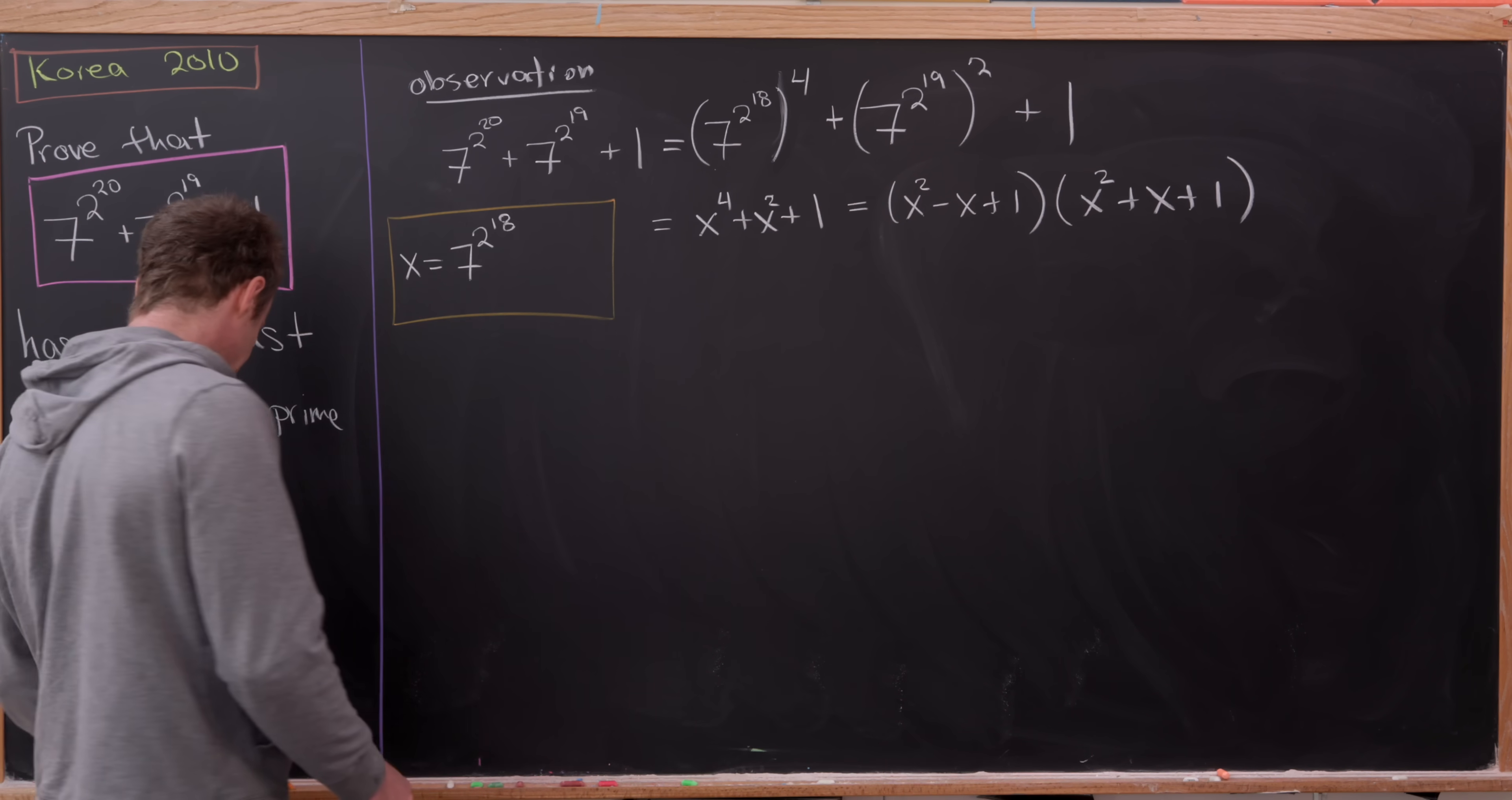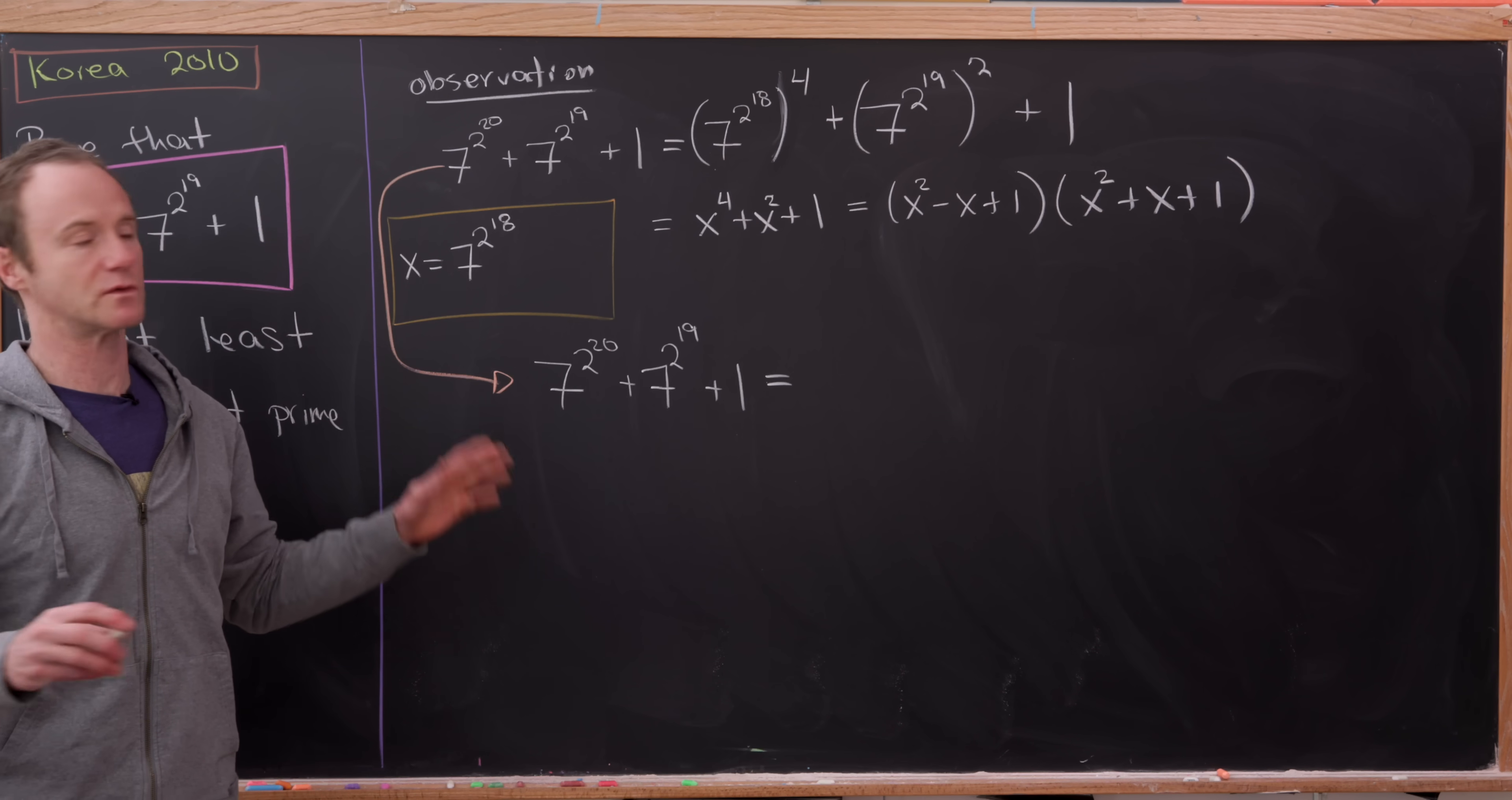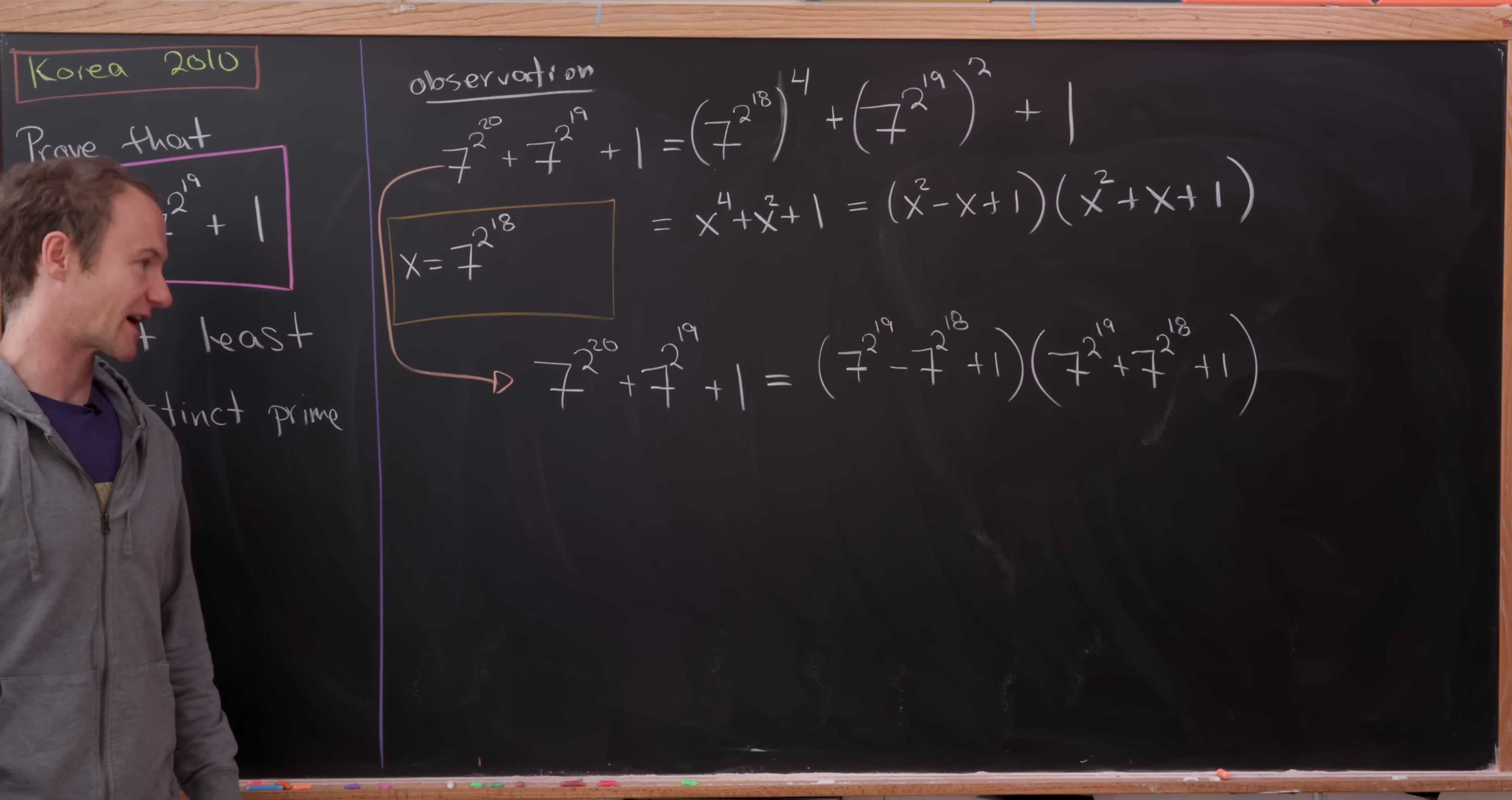But what does that really tell us about our problem? Well, let's take this number over here and apply the factorization. So notice I'm just going to maybe rewrite this one more time 7 to the 2 to the 20 plus 7 to the 2 to the 19 plus 1. So applying this rule and then applying exponent rules to write a simplification, this will factor as 7 to the 2 to the 19 minus 7 to the 2 to the 18 plus 1, and then times 7 to the 2 to the 19 plus 7 to the 2 to the 18 plus 1. So we have that sort of factorization.